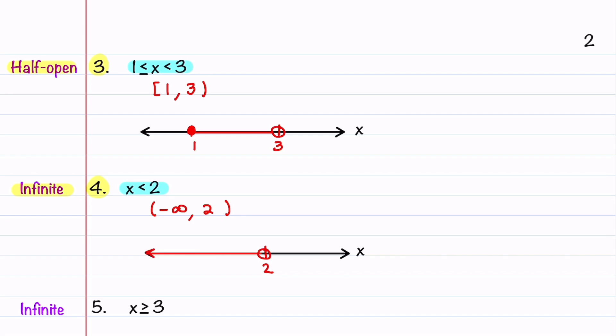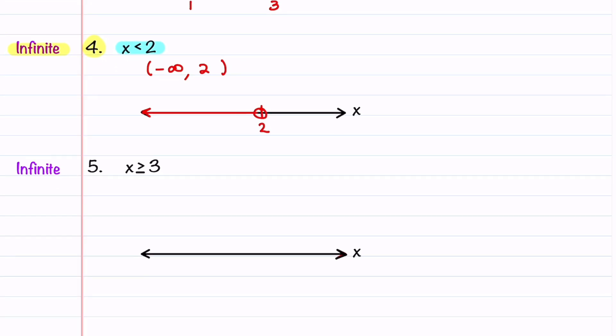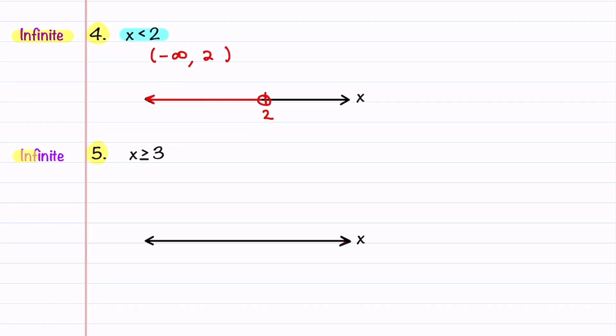Hang with me, we just have one more example. Our last example is another infinite interval example, except this one has an equal sign in it. This inequality tells us that x is all real numbers greater than or equal to 3, extending infinitely to the right. Because 3 is included, we'll put a bracket beside 3, and then it's going to go all the way to infinity.